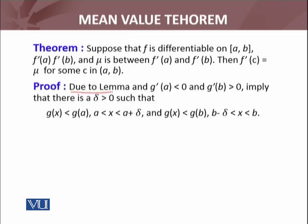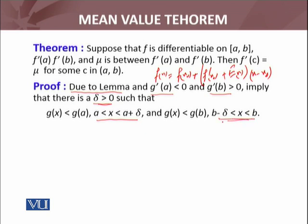Due to an important lemma which states that if f is a differentiable function, then f(x) = f(x₀) + f'(x₀)(x - x₀) + ε(x)(x - x₀). We are going to use that lemma. Due to this lemma and these two facts, there is a δ neighborhood (δ > 0)—left sided and right sided neighborhoods—around a and b such that g(x) < g(a) and g(x) < g(b) for all x in those neighborhoods.